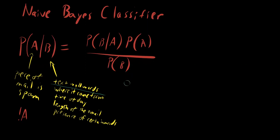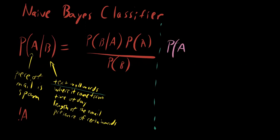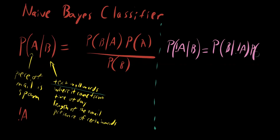Then you divide everything by the probability of seeing that slice of evidence. For classification tasks, this is not something you tend to worry about very much. In a Naive Bayes classifier, at least in this two-class example, you are pairing this probability with the opposite — the probability of the other term. You're comparing it to the probability that it's not spam given the evidence: P(B|not A) times P(not A) divided by P(B).